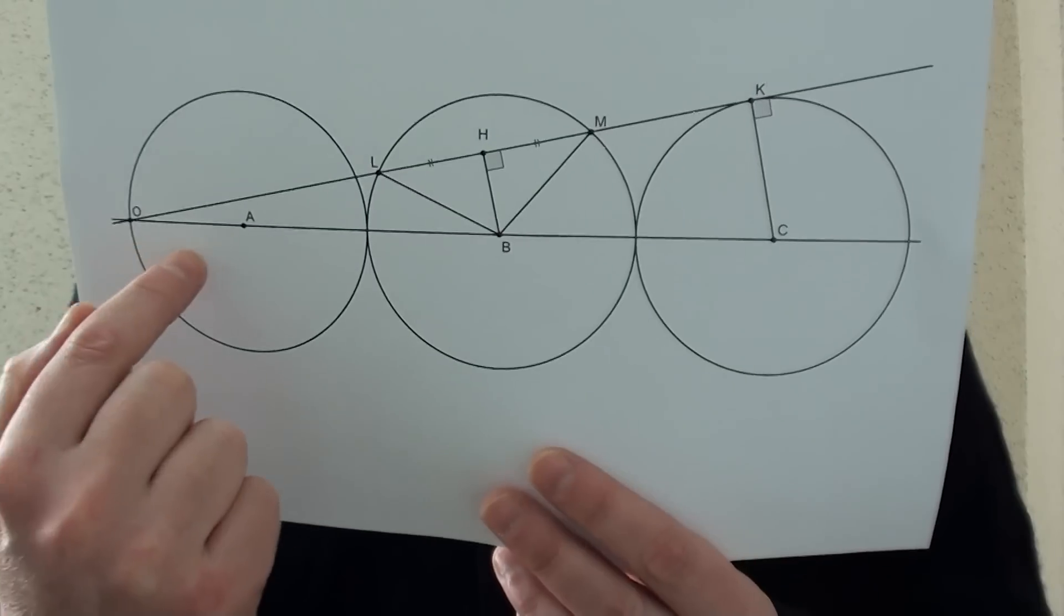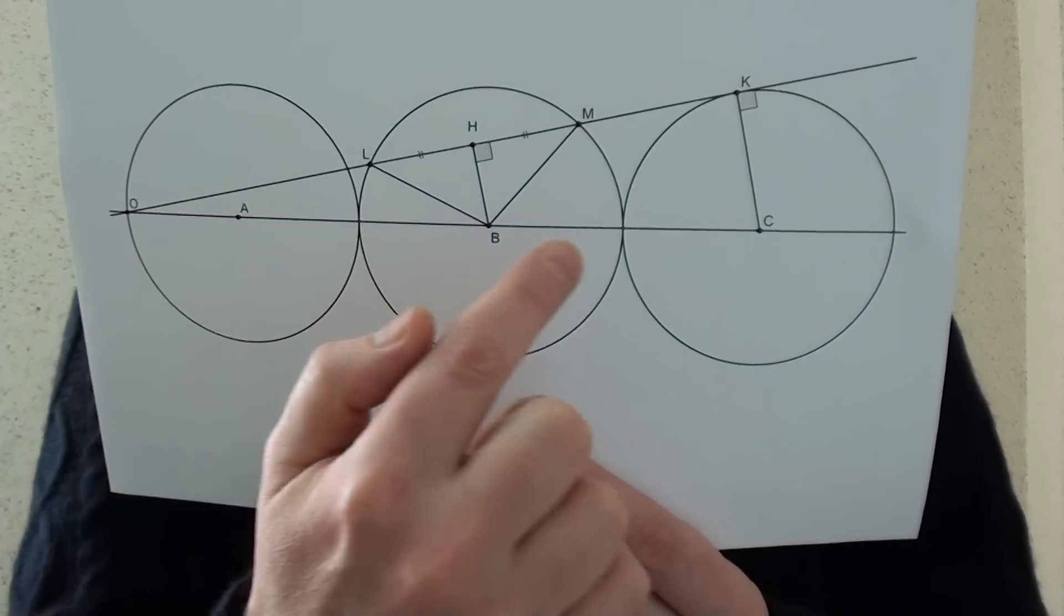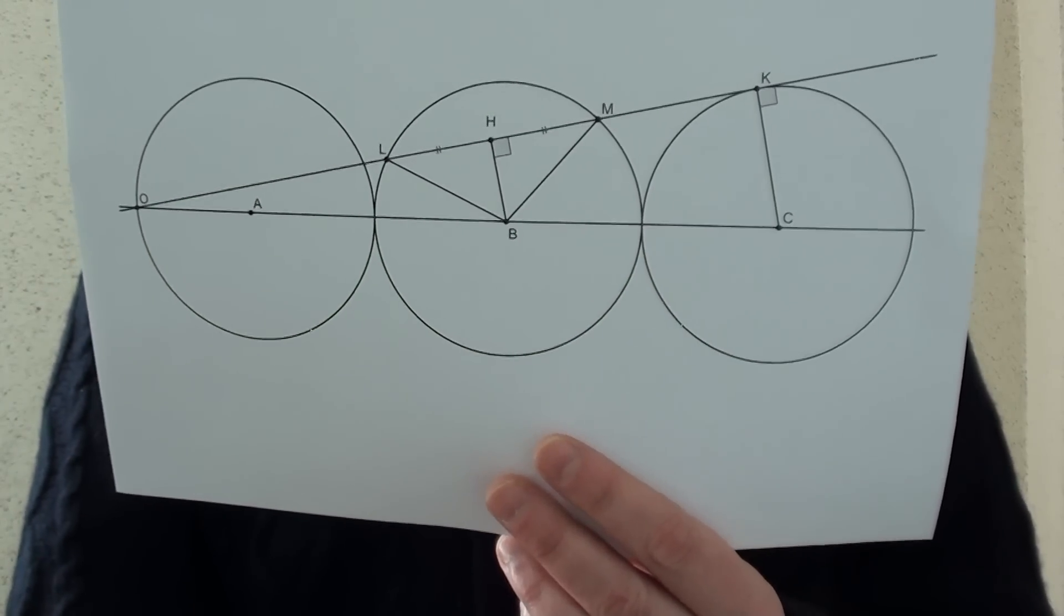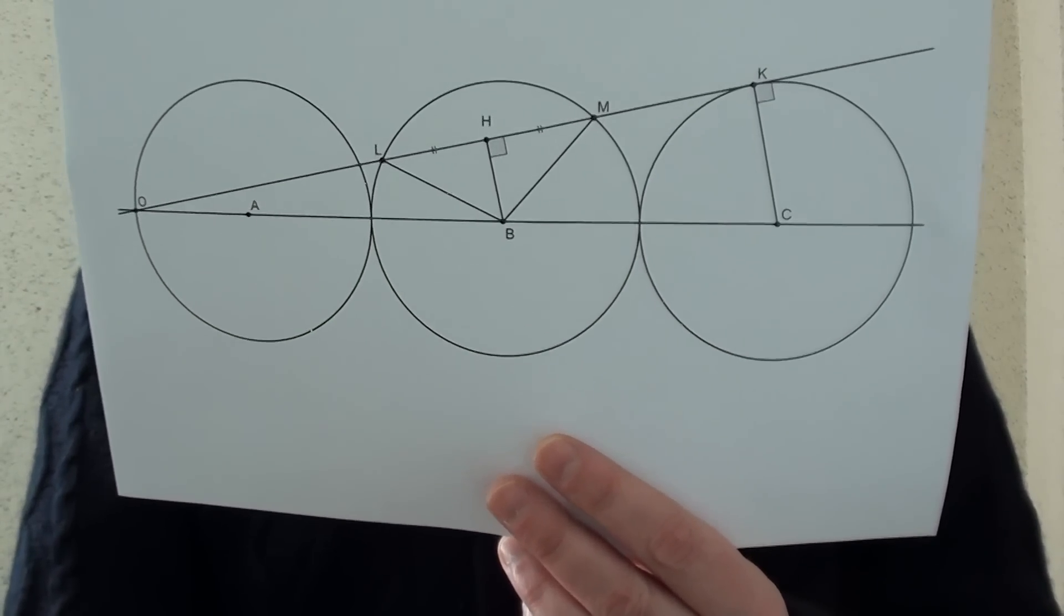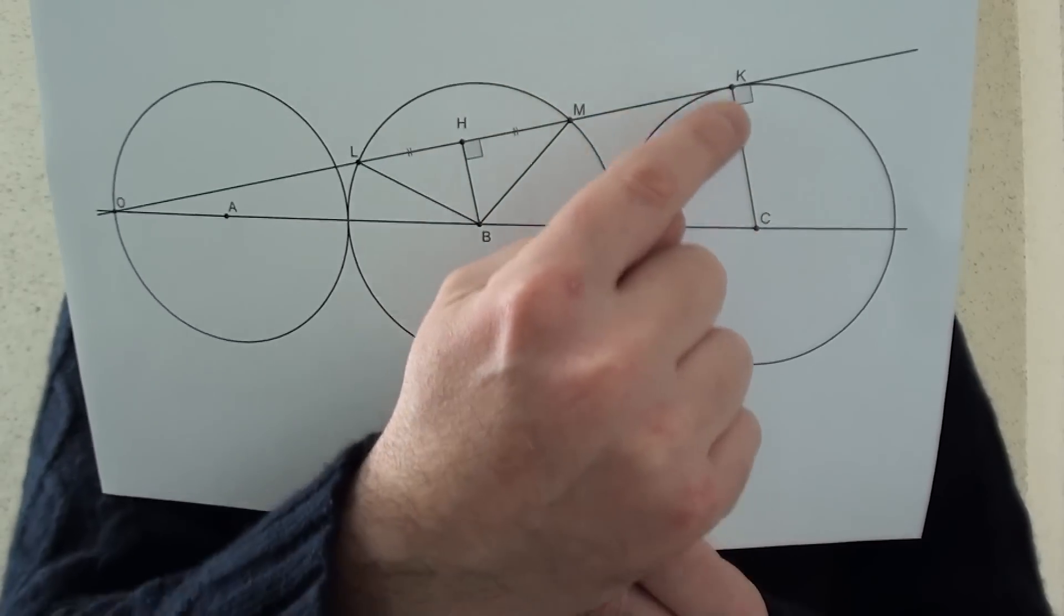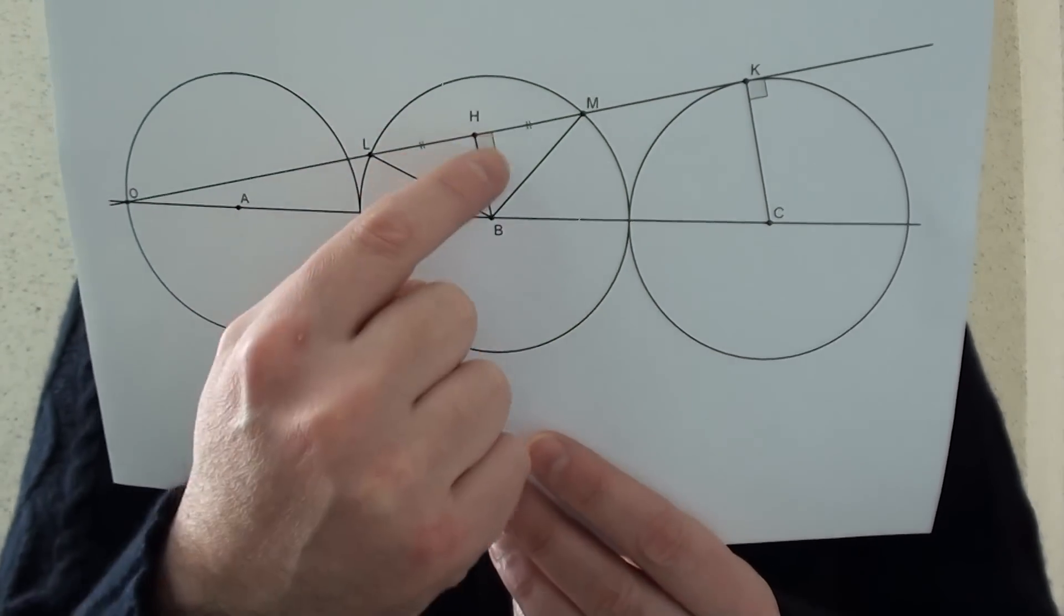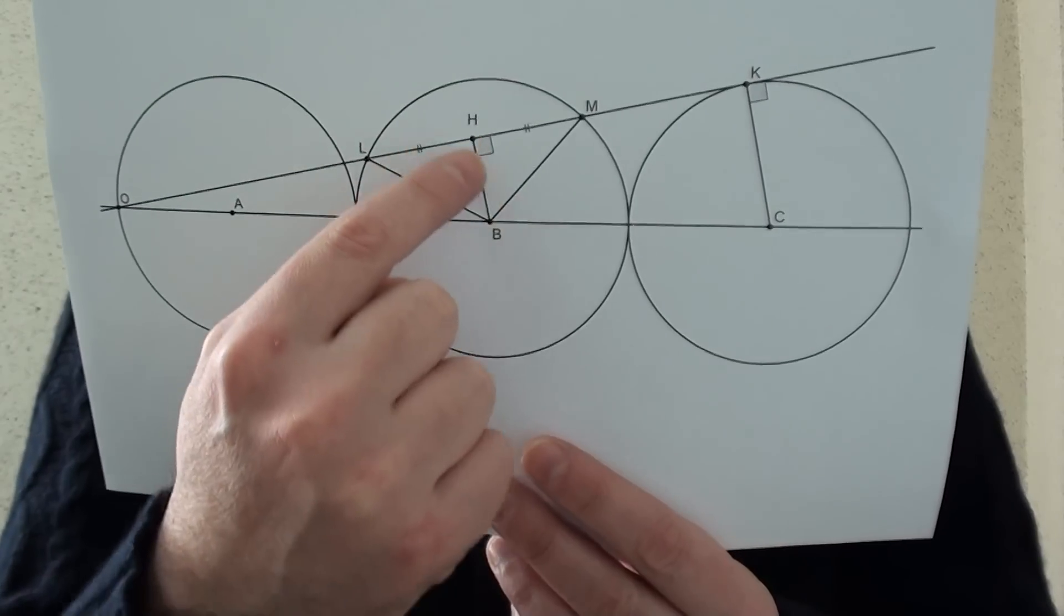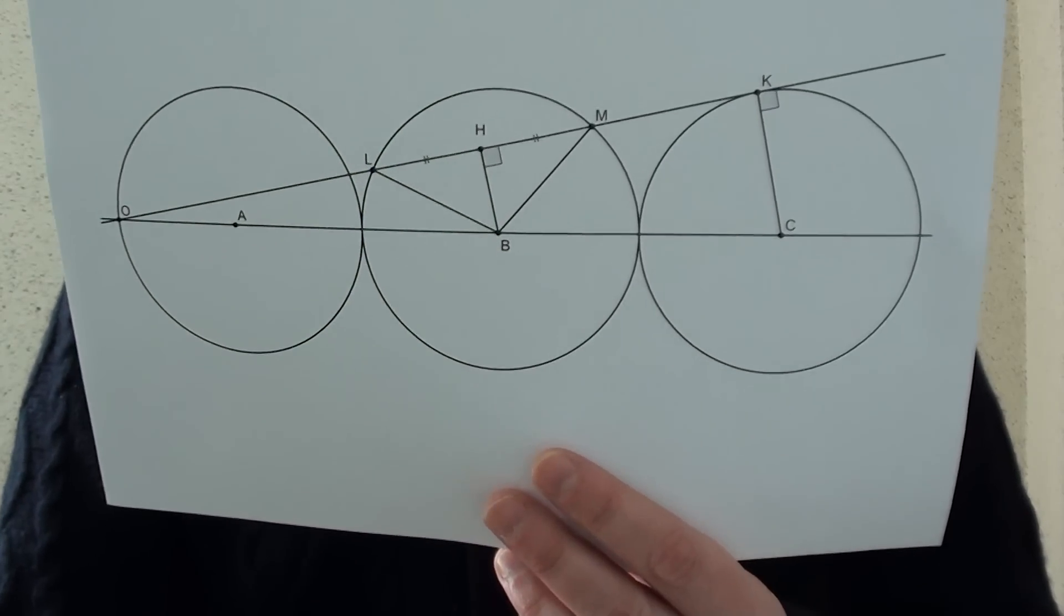And the ratio of their size is actually 15 over 25, which is 3 fifths. If we multiply this length, which is the length of 5 by 3 fifths, we conclude that this line has a length of 3.